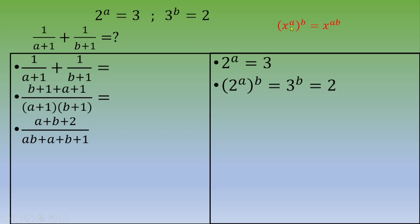So now 2 to the power ab equals 2. You've got two quantities with the same base, which is 2, so you end up with ab equals 1. Now you plug in this quantity.